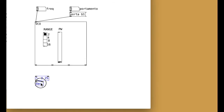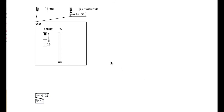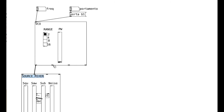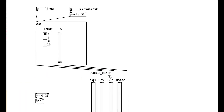Now create a source_mixer object in your test patch alongside your VCO module. Remember the first inlet should be just for messages. We want the three audio oscillators to go to the three audio inlets, so skip the first inlet on the mixer.